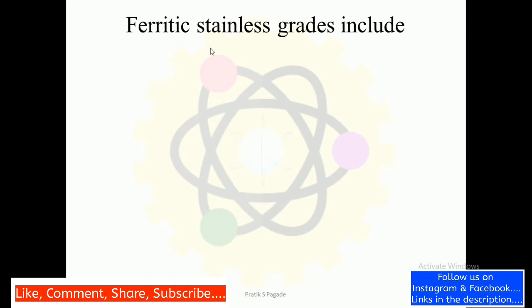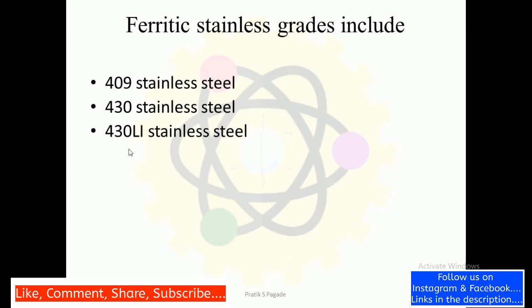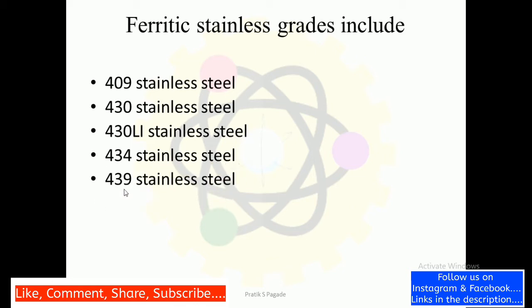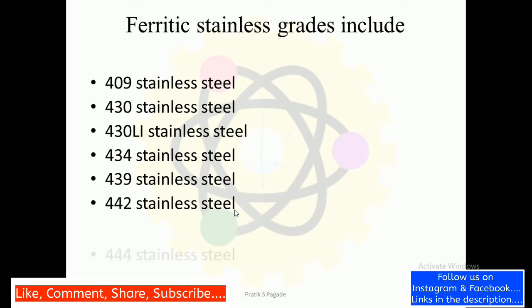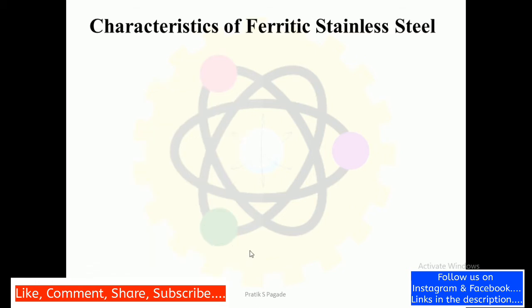Ferritic stainless steel grades include: 409 stainless steel, 430 stainless steel, 430LI stainless steel, 434 stainless steel, 439 stainless steel, 442 stainless steel, 444 stainless steel, and 446 stainless steel.